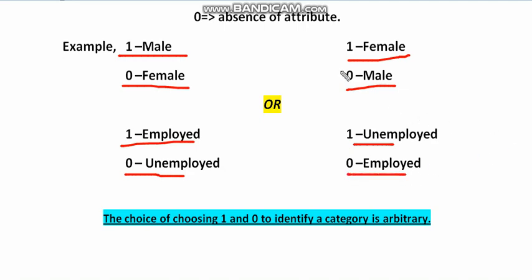The choice that you make in putting values to those attributes like 0 and 1 is totally dependent on you. Whether you want to put 1 for male and 0 for female or 1 for female and 0 for male, it's totally your choice.